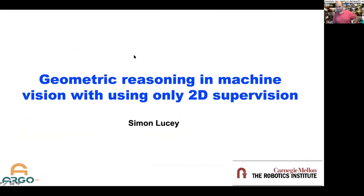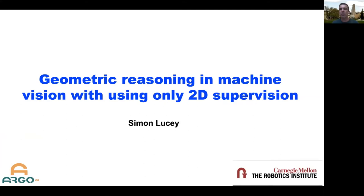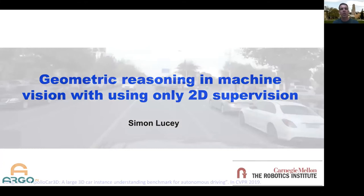Thanks for the intro. I'll try to keep this short and sweet so people can go have their lunches or coffees. The topic of this workshop is fantastic — it's touching upon all things SLAM, deep learning, geometry — all these wonderful things exciting in robotics and computer vision. One thing I want to talk about today is doing geometric reasoning using learning algorithms where we only have 2D supervision, and I'll define what I mean by that.